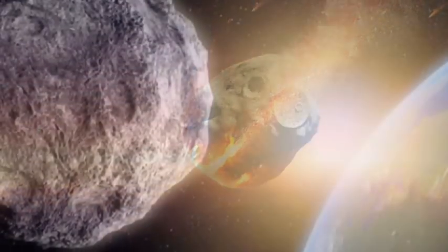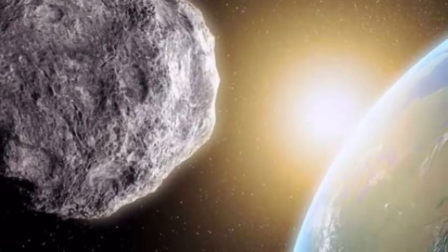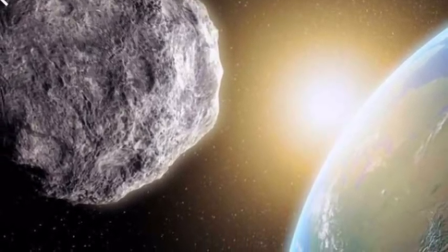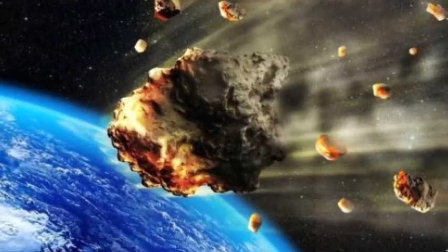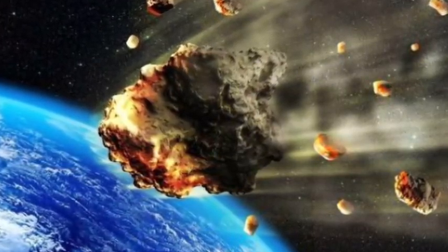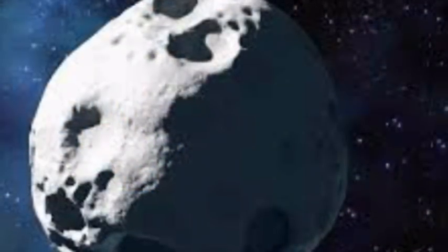The first of the three asteroids, dubbed asteroid 2001 RQ 17, will whiz by on Sunday. NASA expects RQ 17 to skim the planet at a distance of 0.04949 AU, or 4.6 million miles (7.4 million km).